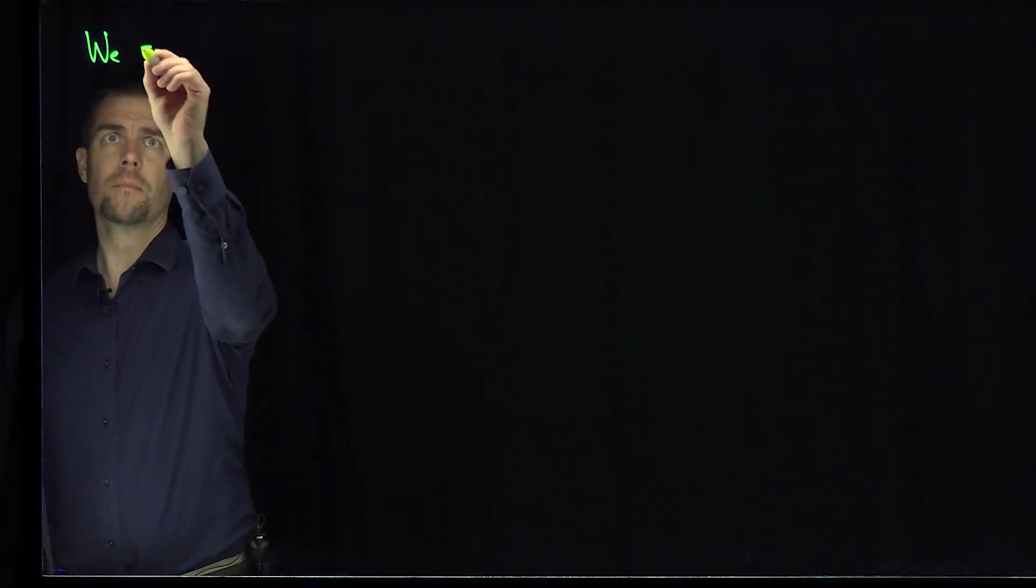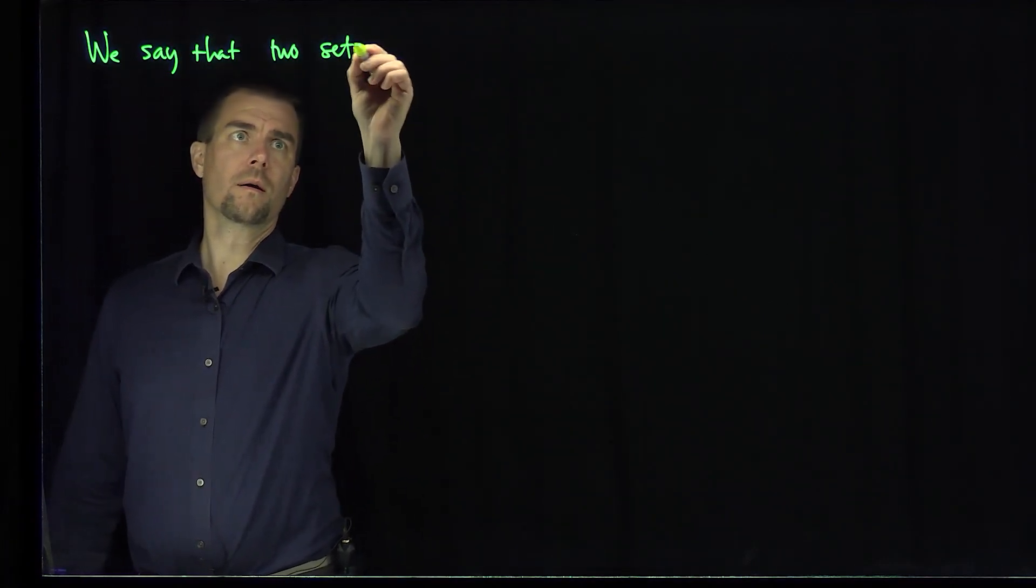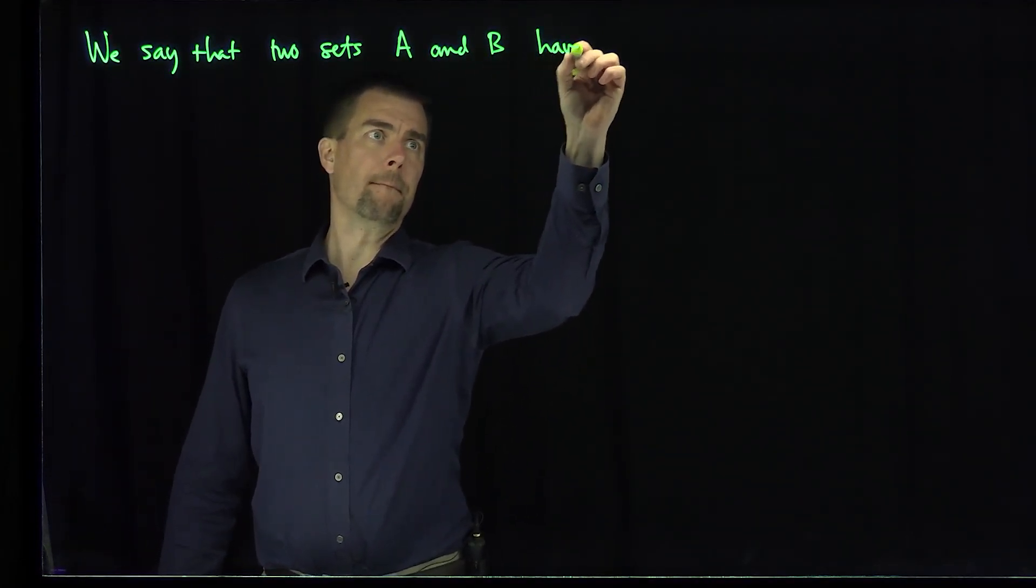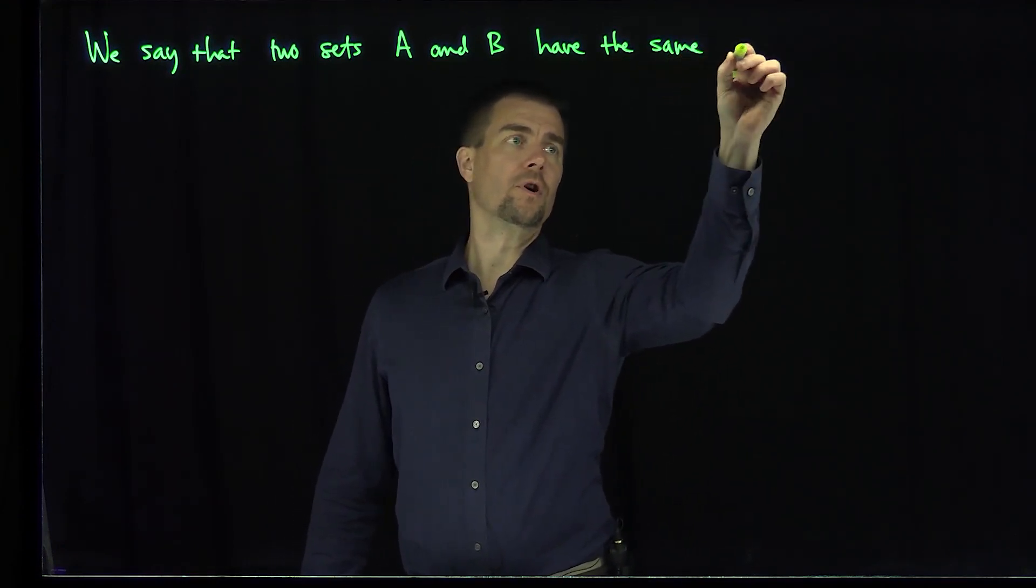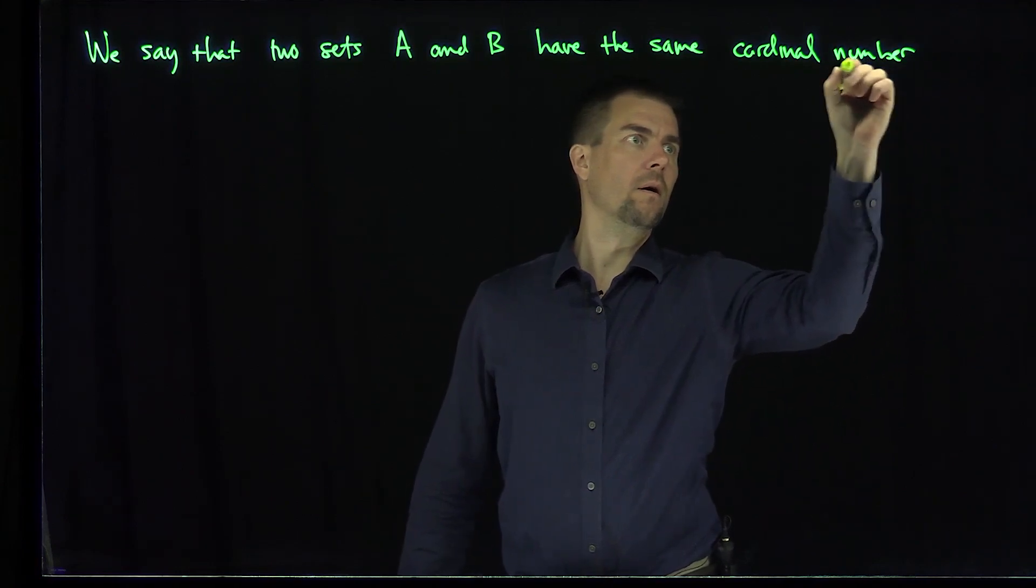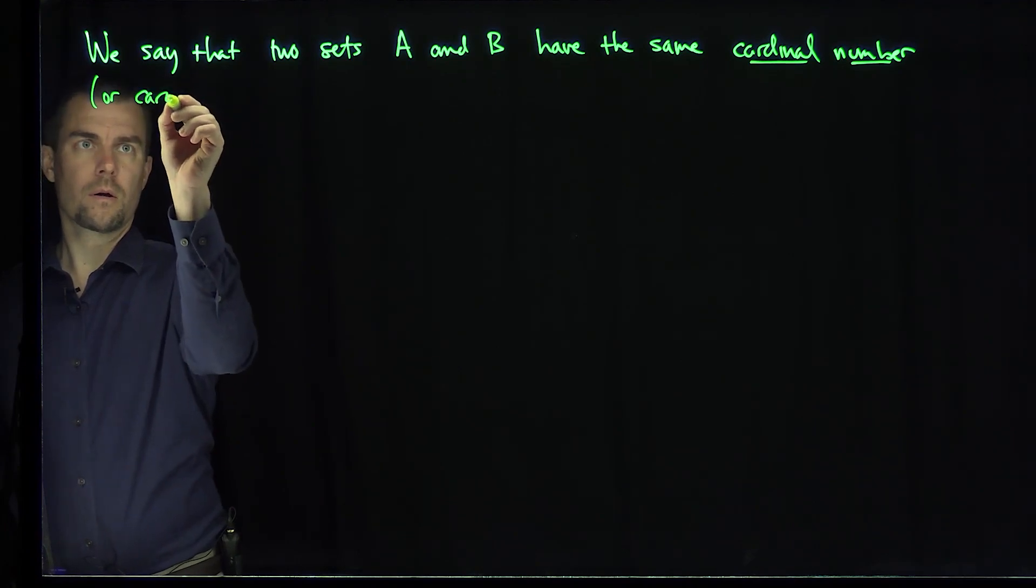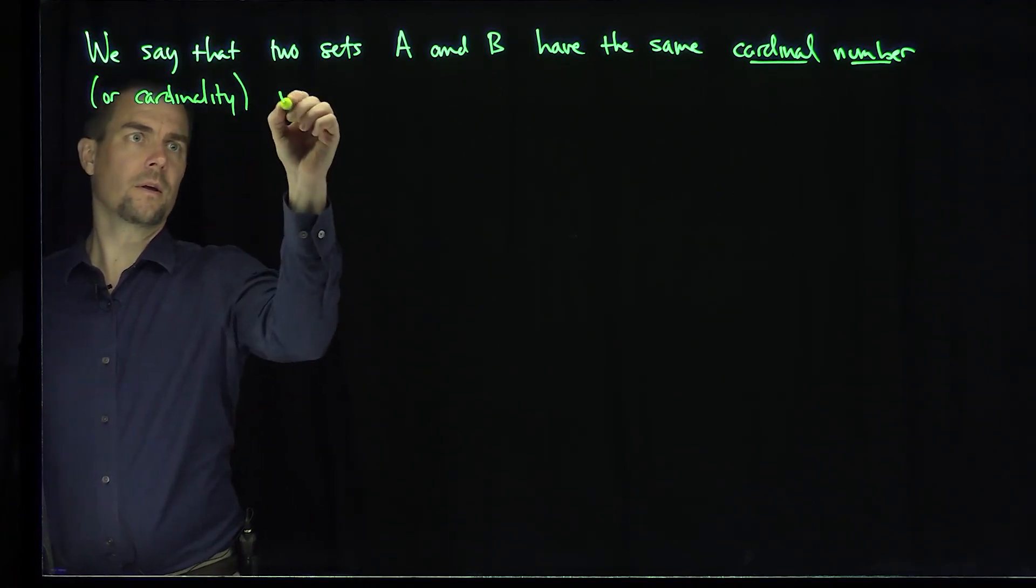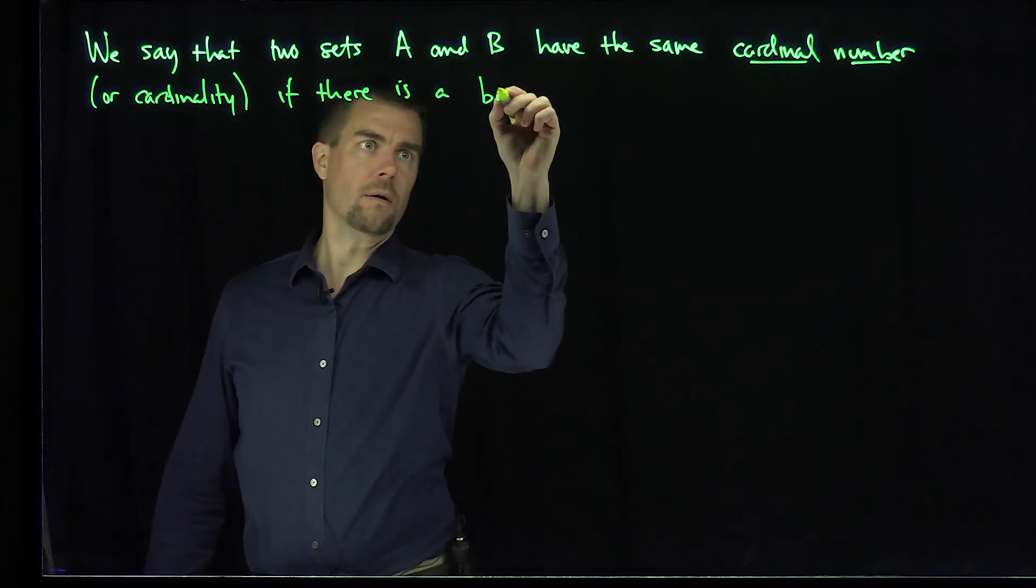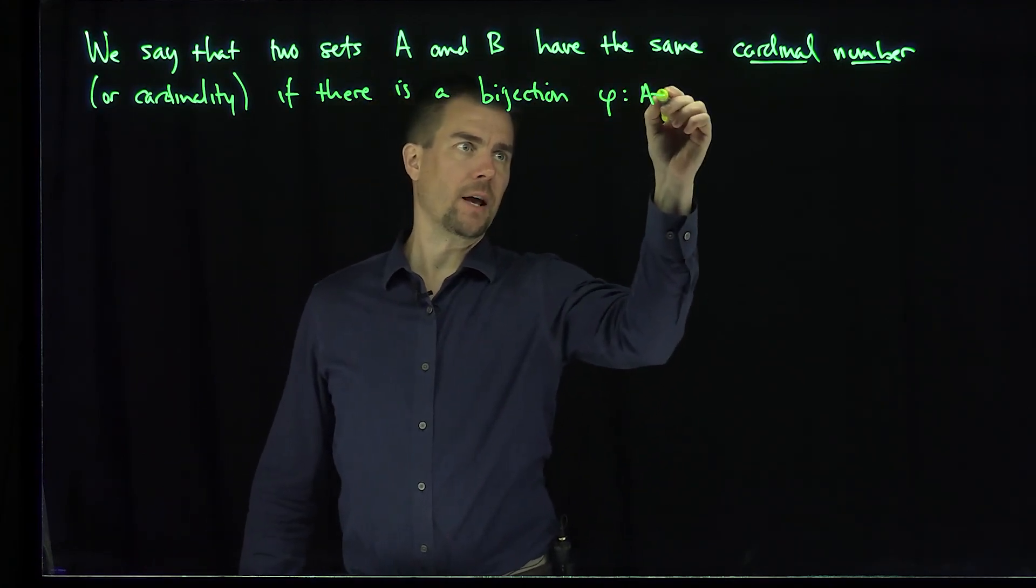We say that two sets A and B have the same cardinal number or cardinality if there is a bijection phi that maps A to B.